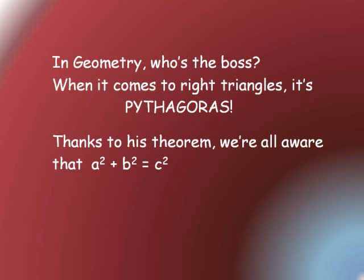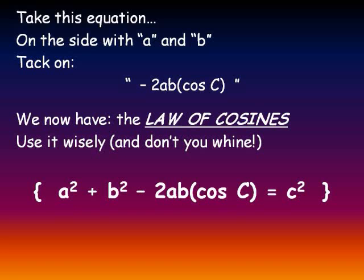In geometry, use the box. When it comes to right triangles, it's Pythagoras. We're all aware that a squared plus b squared equals c squared. Take this equation, on the side with a and b, tackle minus 2ab cosine C. We now have the law of cosines.